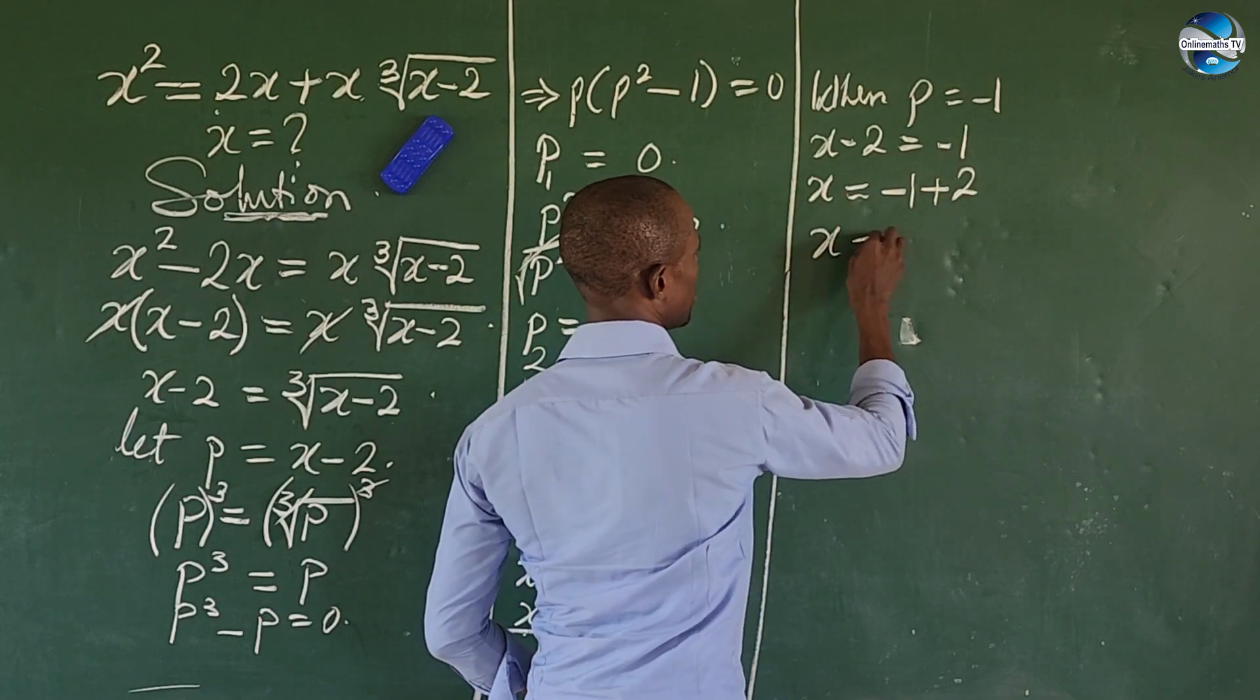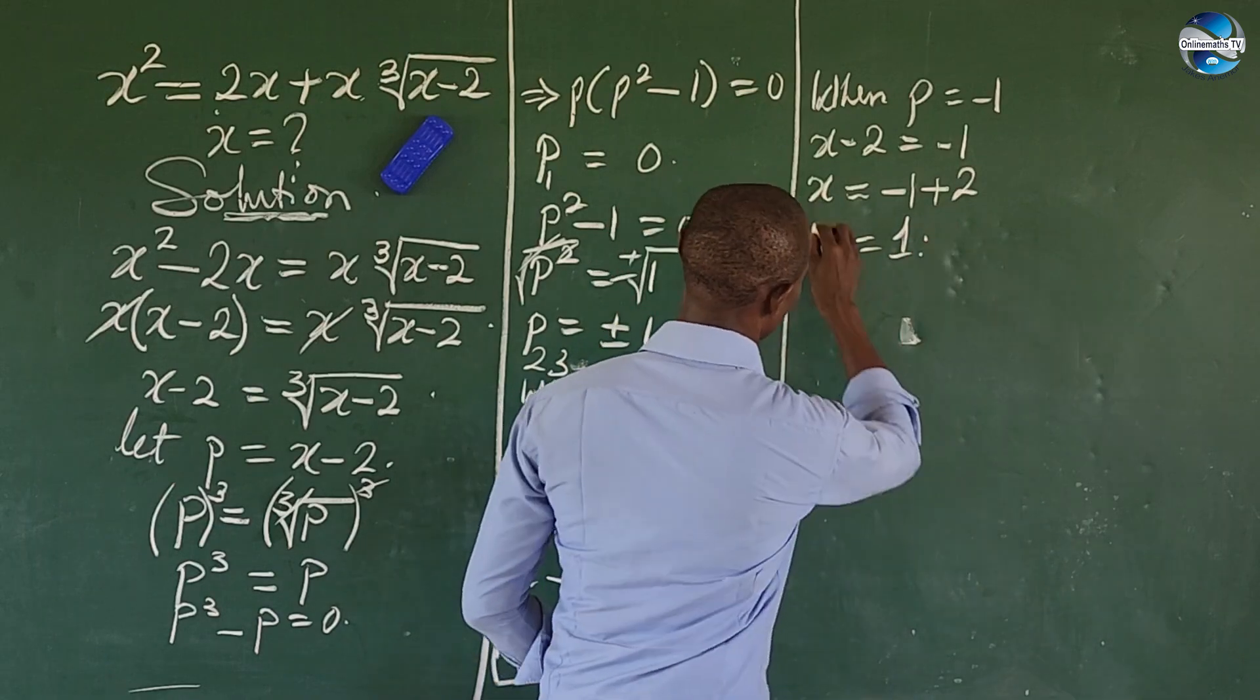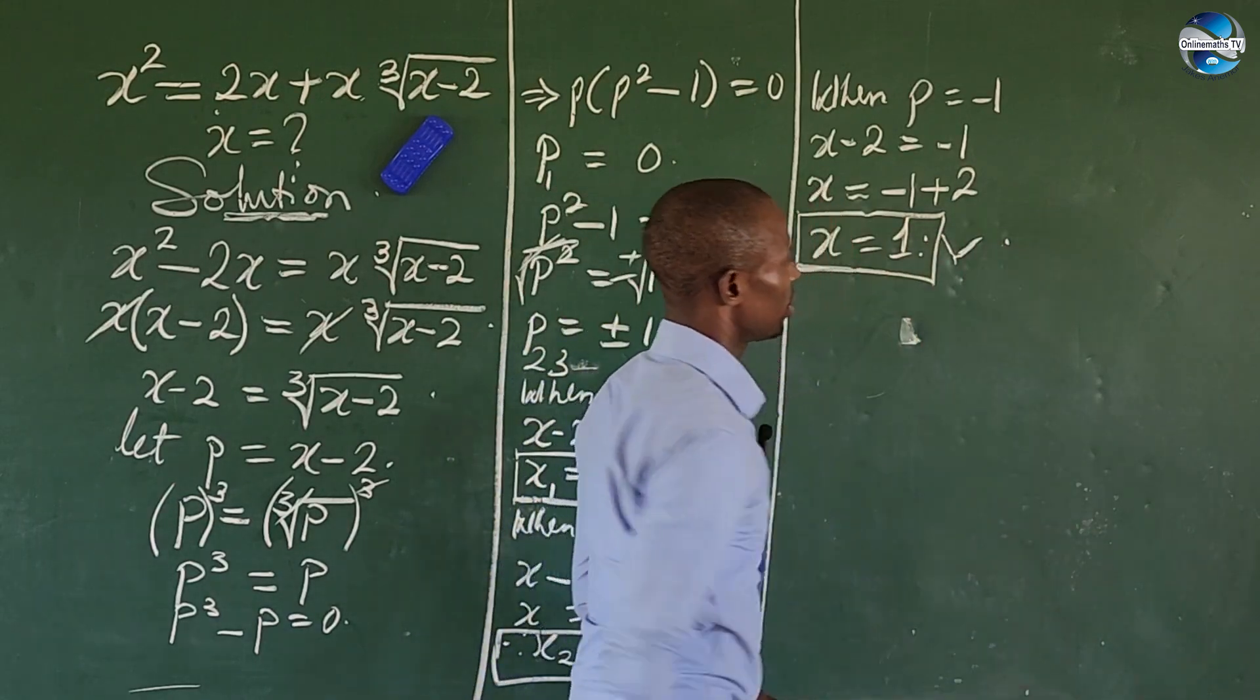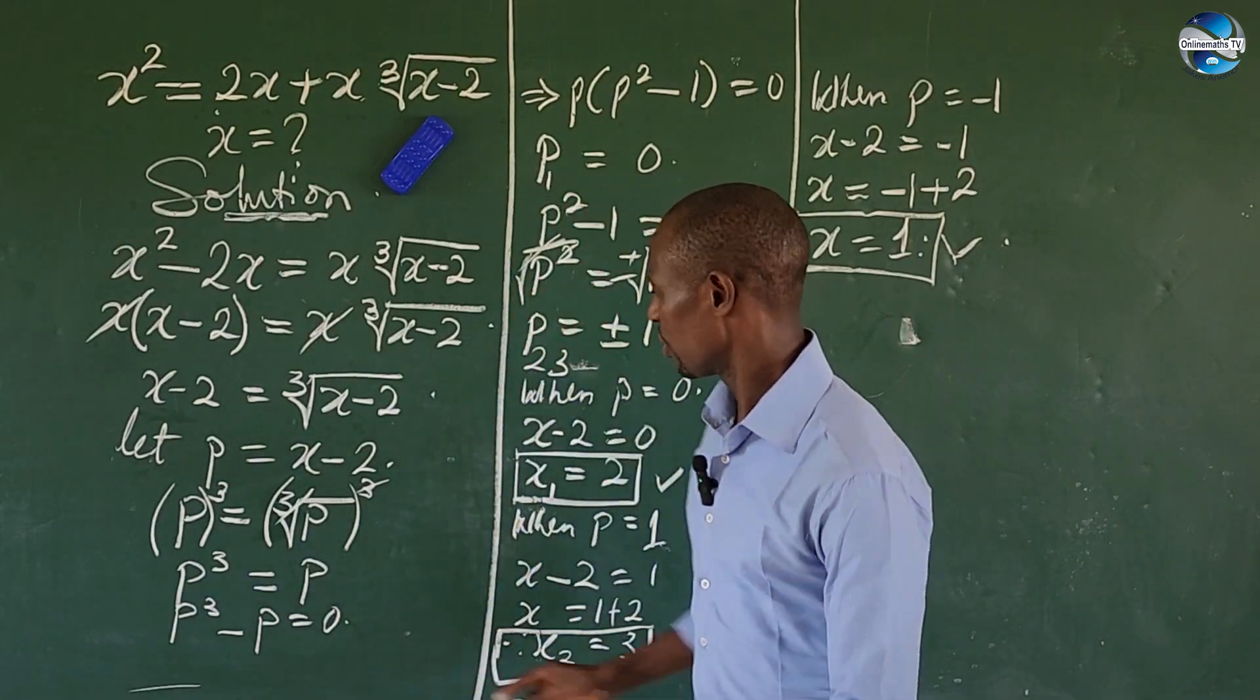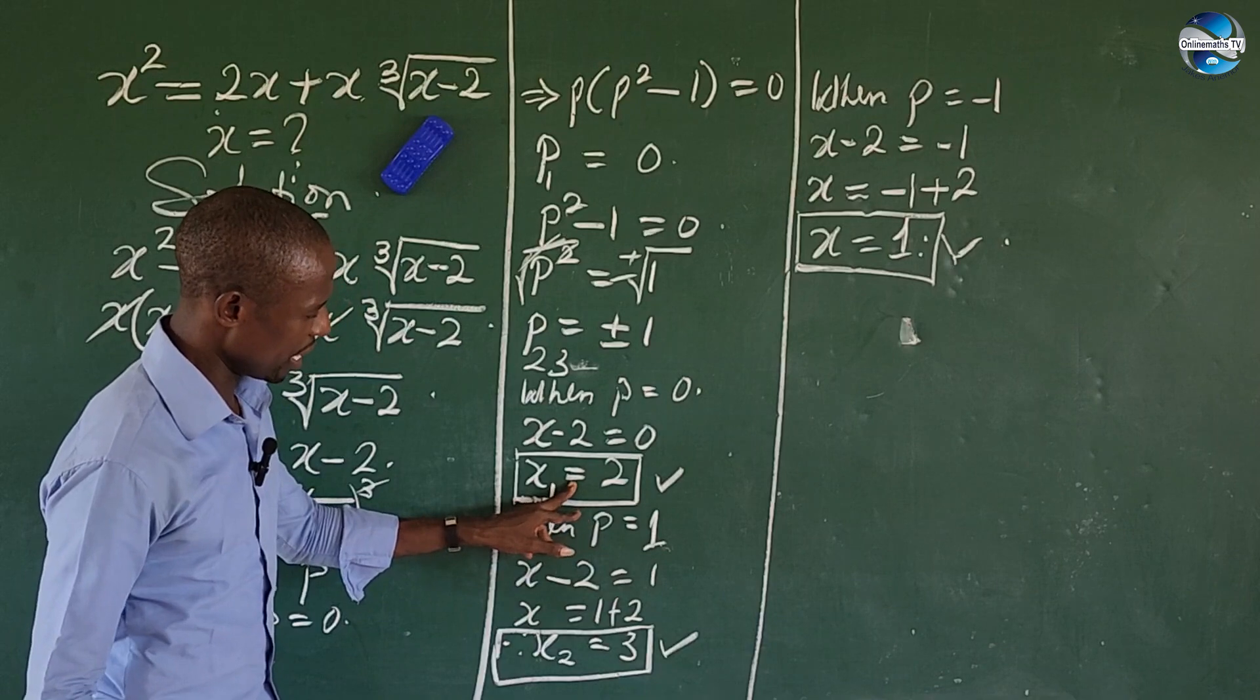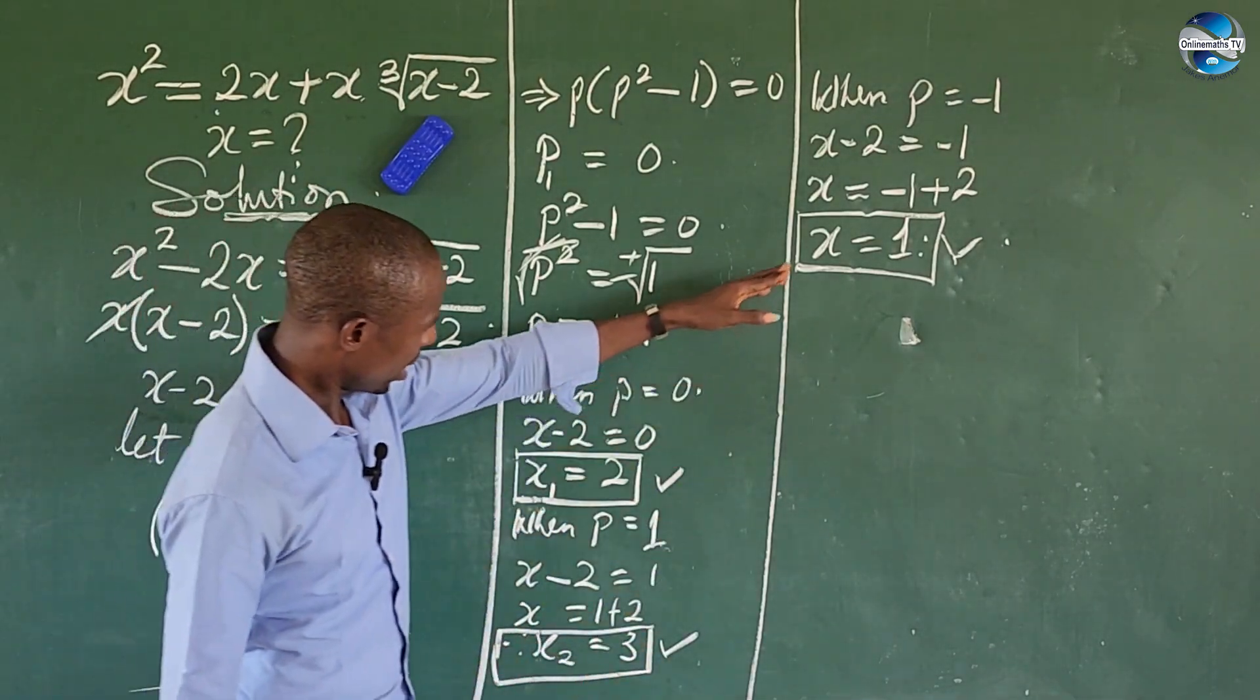Send this to this again, so we'll have x equals minus 1 then plus 2, so x equals positive 1. This is the third root to our radical equation.